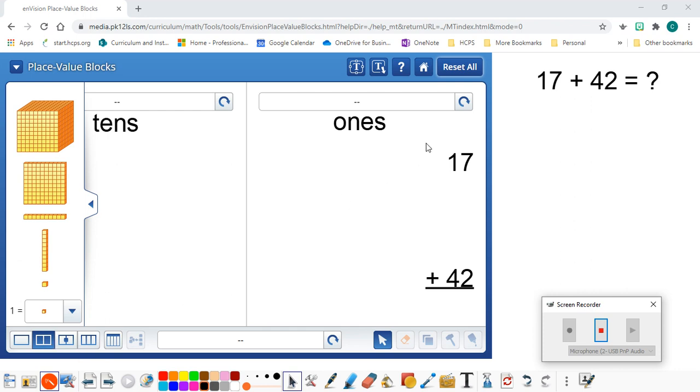So, the first addend is 17. I'm going to drag one 10 over and seven ones over, and as I'm dragging the ones over, I'm using a 10-frame format with two rows of five.